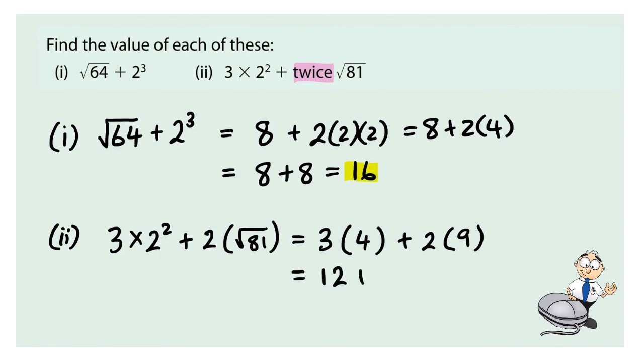And we multiply before we add. 3 fours are 12 and 2 nines are 18. And lastly, we do our addition or subtraction. So, 12 and 18 is 30.